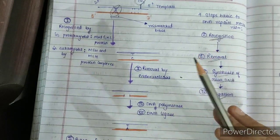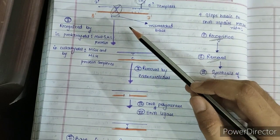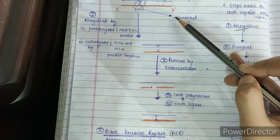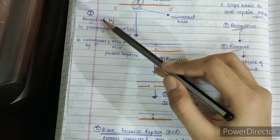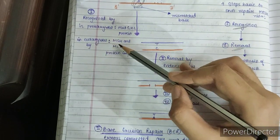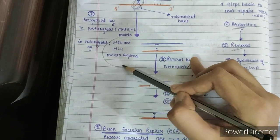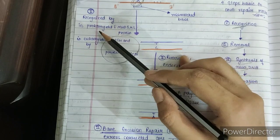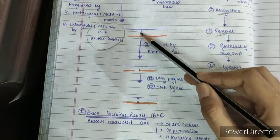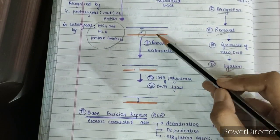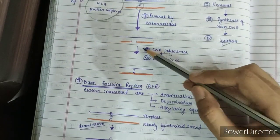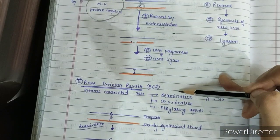In mismatch repair, the first step is recognition of the base mismatch. In prokaryotes it is recognized by the MutSHL protein; in eukaryotes it is recognized by MSH and MLH protein complexes. The second step is removal of the mismatch base from the new daughter strand — not the template strand — by the activity of endonucleases. The third step is synthesis by DNA polymerase, and finally nicking and sealing is done by DNA ligase.